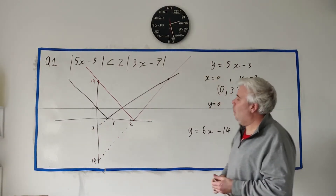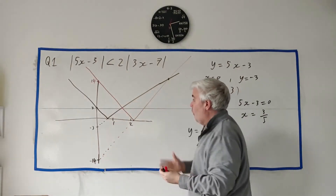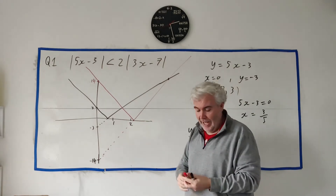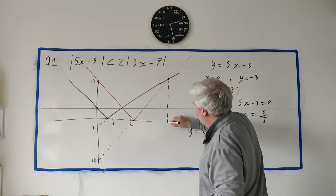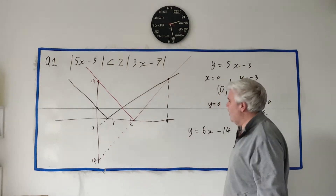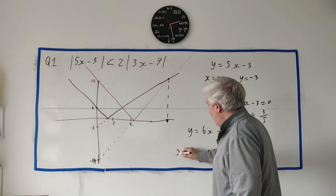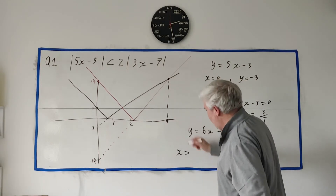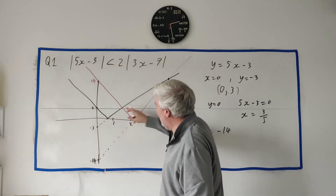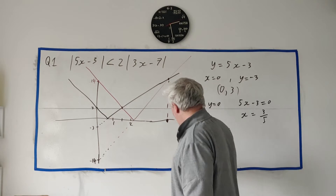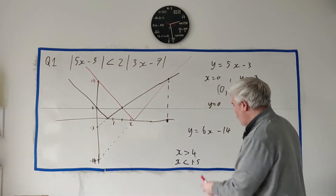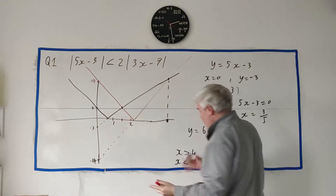Graphically, what we're asking is: when is the right side bigger than the left side? When is the red line above the black line? From the picture it looks like there's an intersection around x equals 4 or 5, and another around x equals 1.5. Everything bigger than the right intersection point, and everything less than the left intersection point, gives us our answer. We just need to find the exact values of those two points.